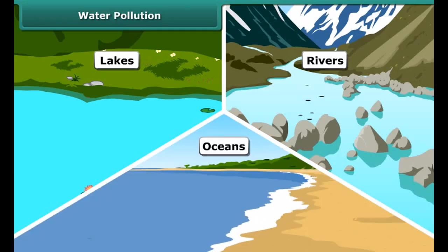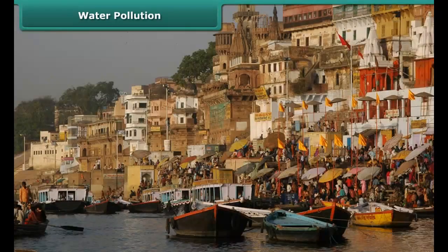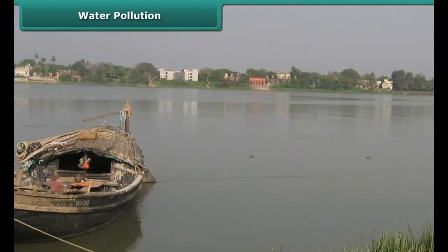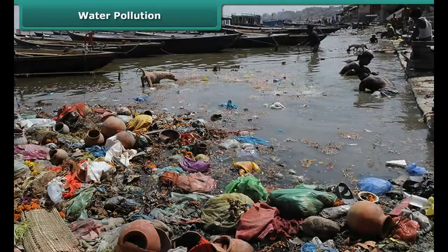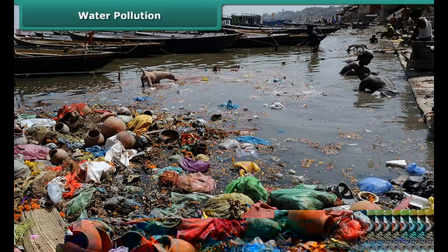However, look at what we are doing to these resources. Let us take the example of river Ganga. Millions of people depend on it for their daily needs and livelihood. Recently, the Worldwide Fund for Nature (WWF) found that Ganga is one of the 10 most polluted rivers in the world.